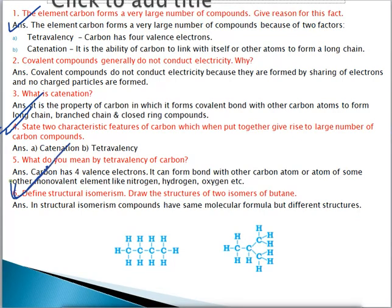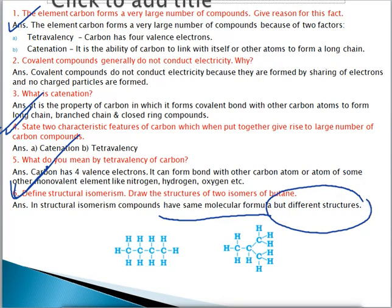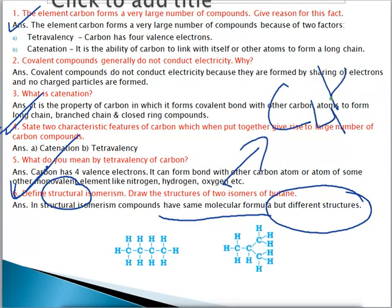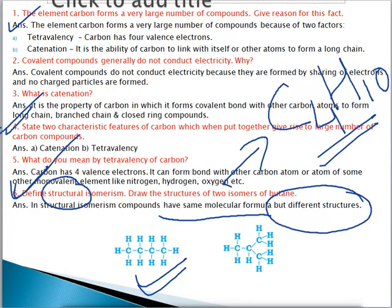Next: define structural isomerism. In structural isomerism, the compounds will have the same molecular formula but their structures will be different. From the name you can understand — structural means their structures will be different. We also have to write two isomers of butane. The molecular formula of butane is C₄H₁₀. We can write C₄H₁₀ in two different ways: first a normal straight-chain structure of butane and next a branched structure. If you count the carbon atoms and hydrogen atoms, they are the same in both structures. These are the two structural isomers of butane.